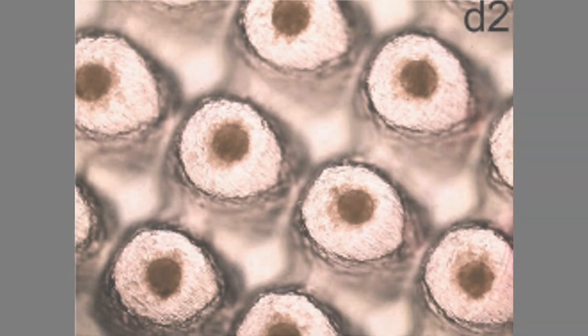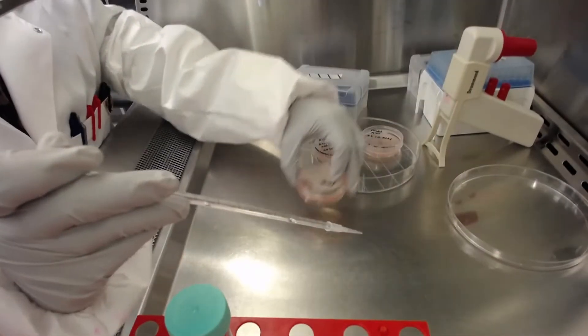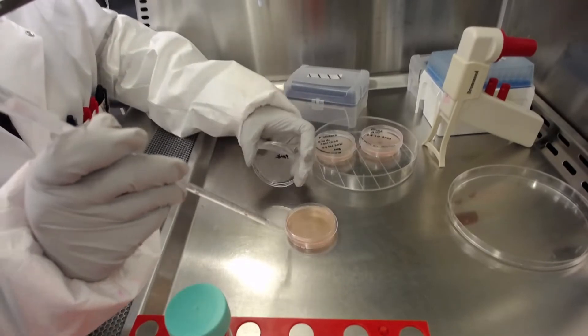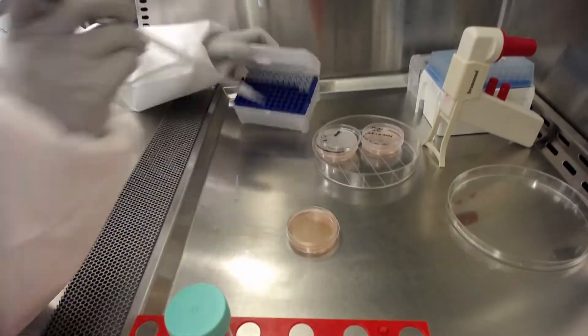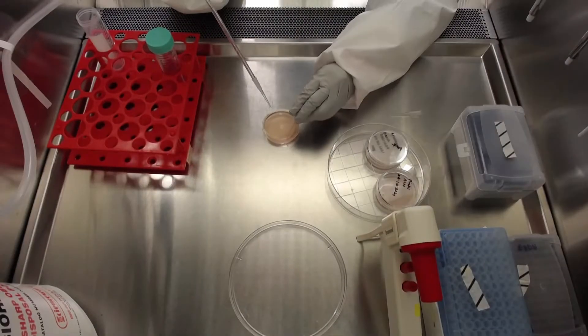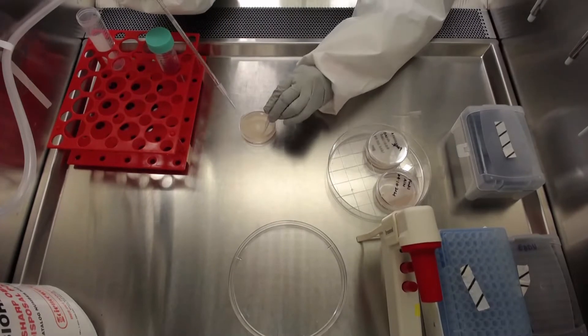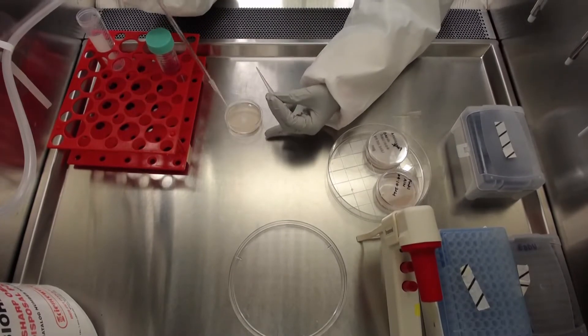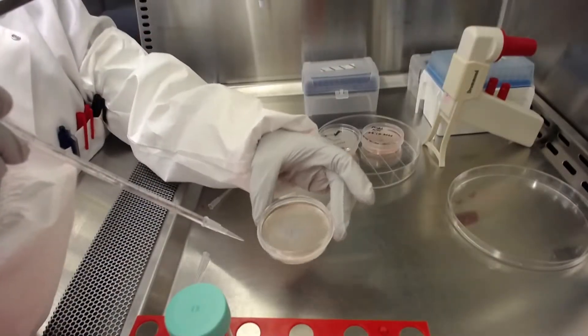Before changing the media, verify the EBs under the microscope. This is how they should look like at day 2. To change the media at subsequent stages, remove the media slowly from the side to avoid disturbing the EBs. You can do that by making some space between the disc and the dish using a pipette tip and placing the aspirator tip adjacent to it.